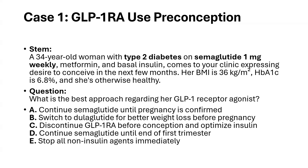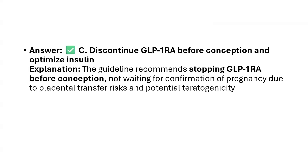The options are: continue semaglutide until pregnancy is confirmed then stop; switch to dulaglutide for better weight loss before pregnancy; discontinue GLP-1 receptor agonist before conception and optimize her insulin; continue semaglutide until end of first trimester; or stop all non-insulin agents immediately. The correct answer is to discontinue the GLP-1 receptor agonist before conception and optimize her insulin.